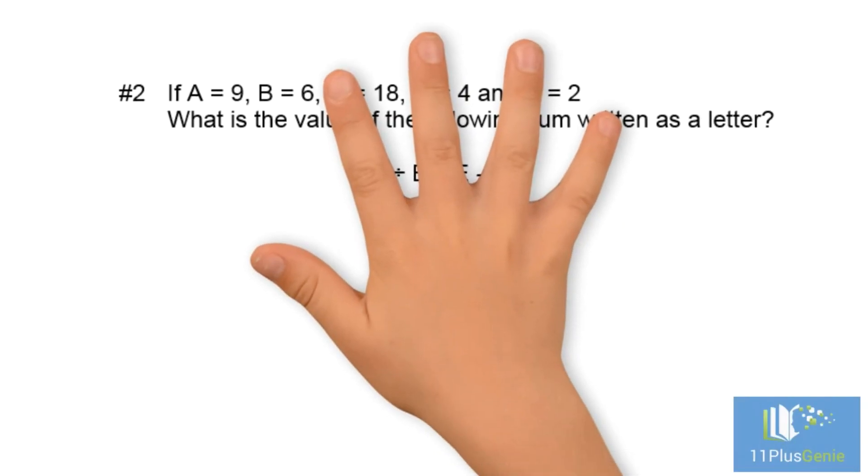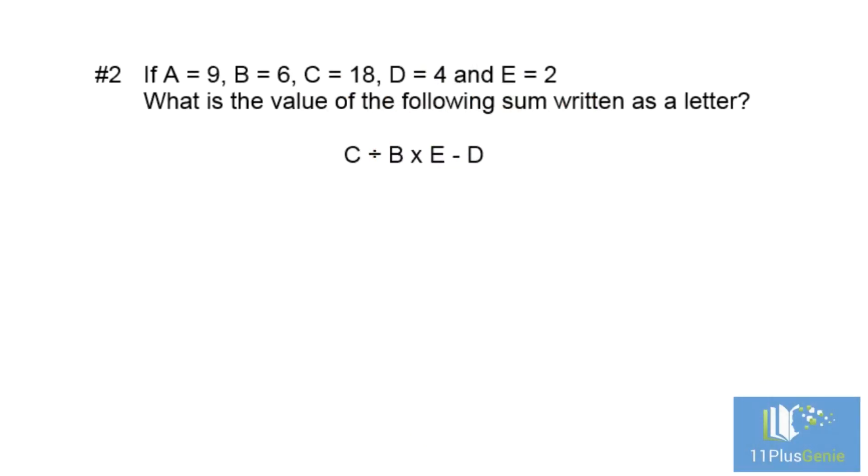Example number two: If A equals 9, B equals 6, C equals 18, D equals 4, and E equals 2, what is the value of the following sum written as a letter? C divided by B times E minus D.